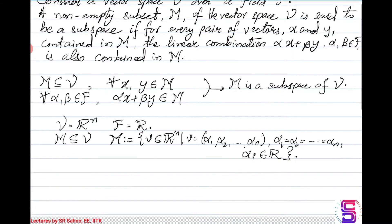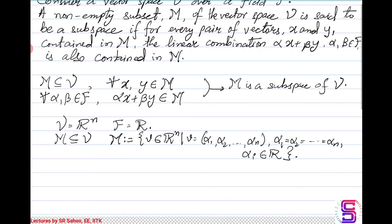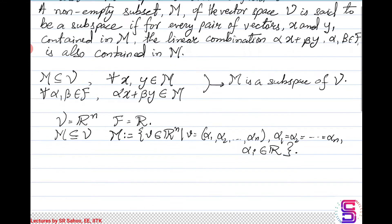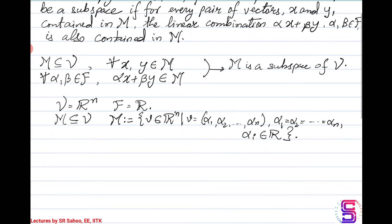You can have vectors which are (1,1,1,...,1) or (2,2,2,...,2) or (5,5,5,...) or (0,0,0,...,0) and so on. Now let us check if the condition that the linear combination of every pair of vectors in M also belongs to the set M holds.